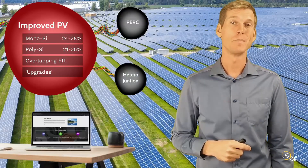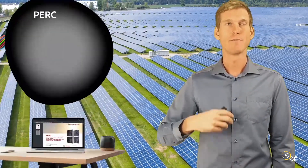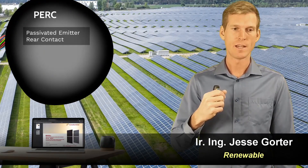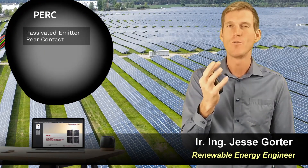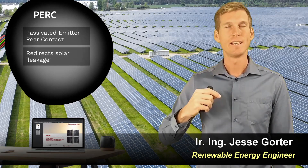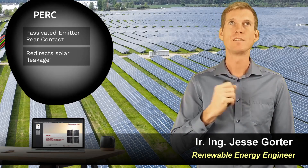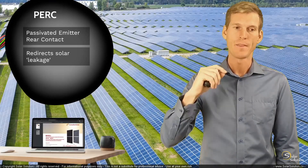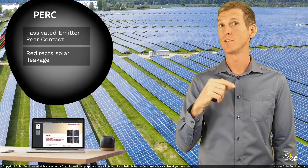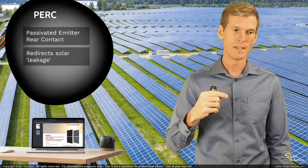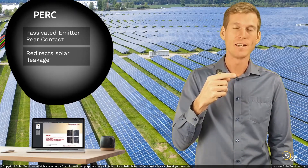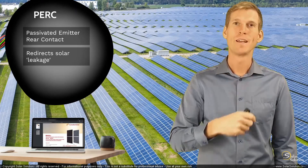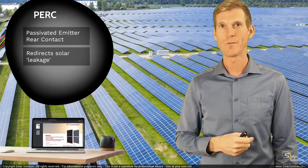PERC stands for Passivated Emitter Rear Contact. In simple terms, it redirects solar leakage — it reuses, recycles, and redirects some of the solar power hitting the panel that is not directly being converted into electricity. It takes initially unused solar power and redirects it so that it can still squeeze a little bit more electrical energy out of that solar power.